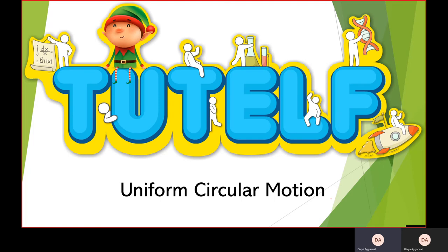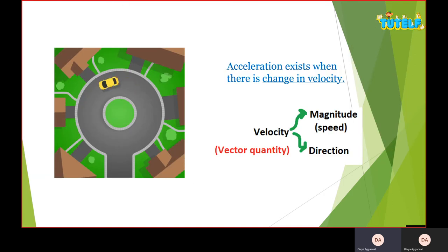When an object covers equal distance in equal intervals of time, it's called uniform motion. If it covers equal distance in equal interval of time, that means the speed is constant.